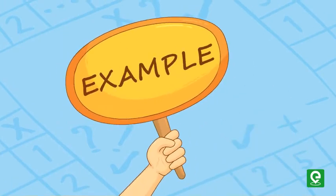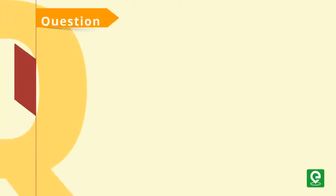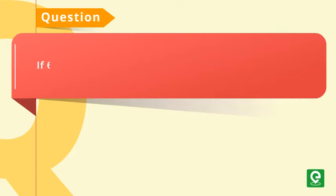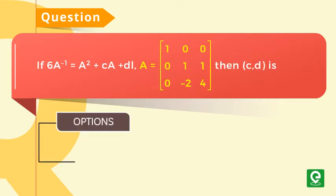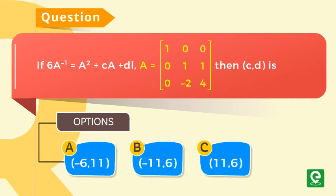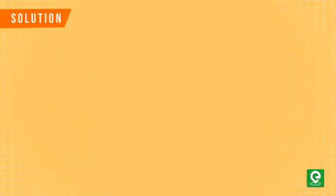Let's solve a question based on the above theorem. Question: if 6 times A inverse equals A squared plus cA plus dI, where matrix A is as shown, then find c and d. This question was asked in IIT JEE 2005.